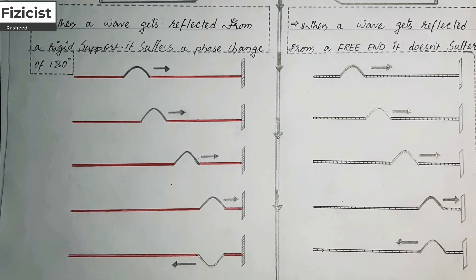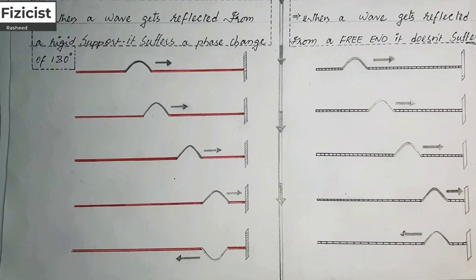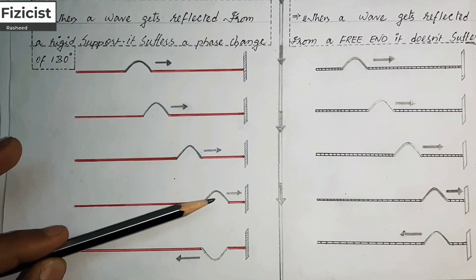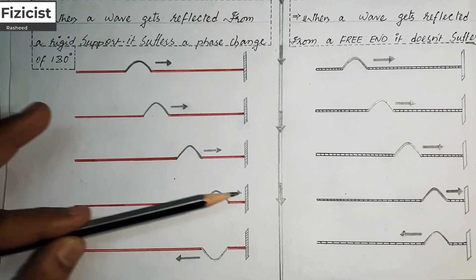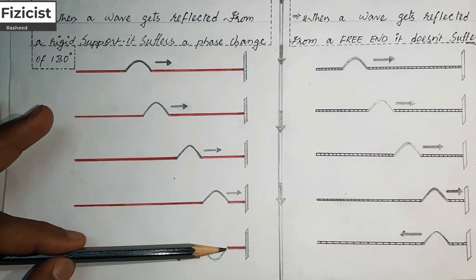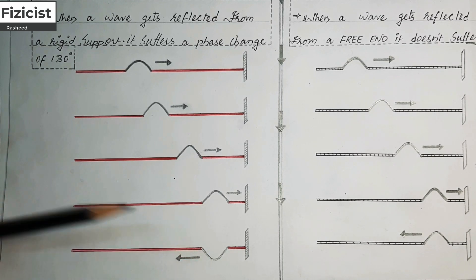Many students may wonder why the wave suffers a phase change of 180 degrees. When the wave pulse continuously travels towards the fixed end and reaches it, it exerts an upward force on the fixed end. From Newton's third law, an equal and opposite force is exerted on the rope — meaning in the downward direction — so the wave pulse suffers a phase change of 180 degrees, meaning it flips down.